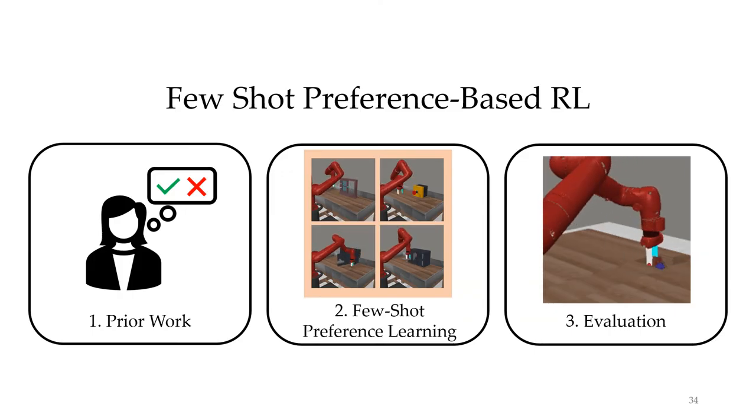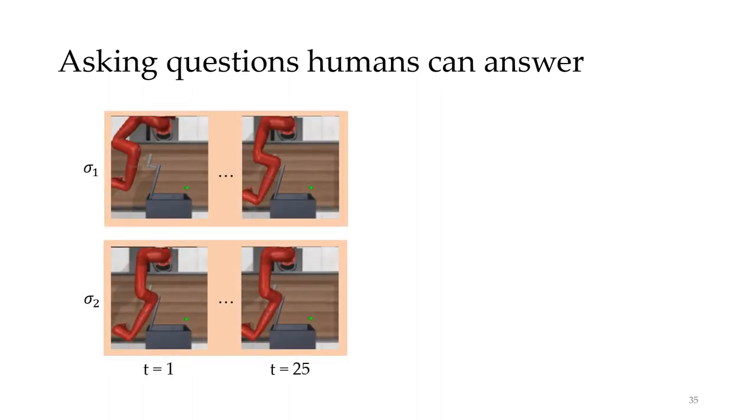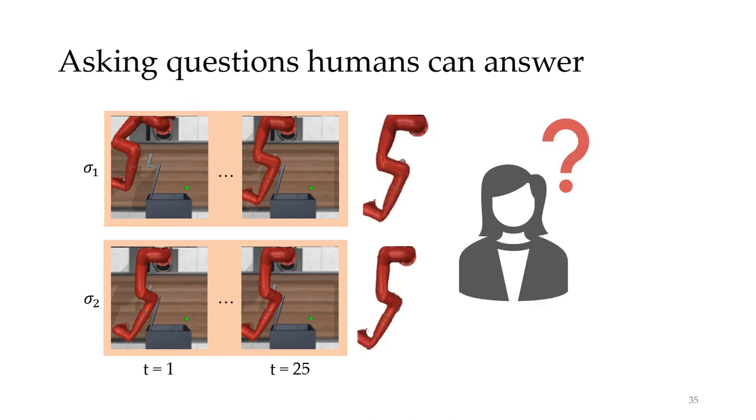Now that we've seen how few-shot preference-based RL improved upon previous state-of-the-art results, we can look at what's next. One thing that hasn't had enough focus is generating easy to answer queries. Here's the previous example that Pebble showed the user from before, where the robot arm was in largely similar positions. Asking queries that maximize disagreement often results in queries that only differ slightly in joint positions, and humans have a hard time reasoning about this. It would be interesting to develop methods that focus on asking questions that are easier for humans to answer.